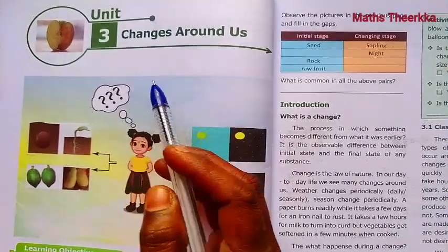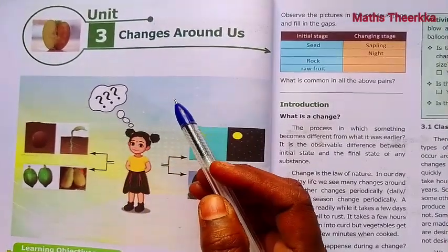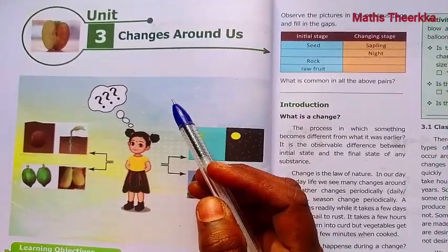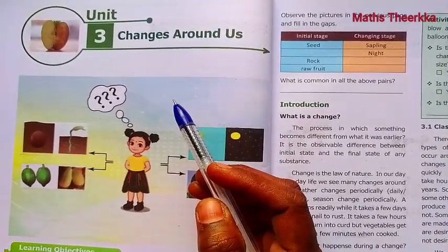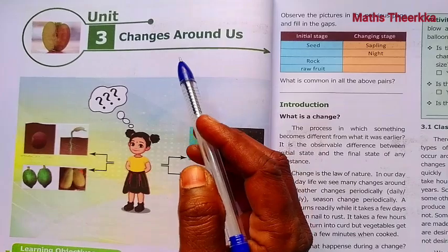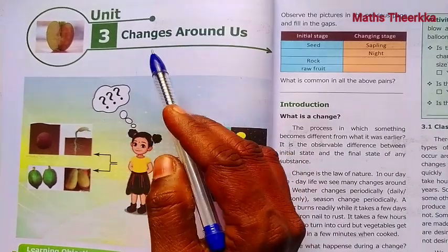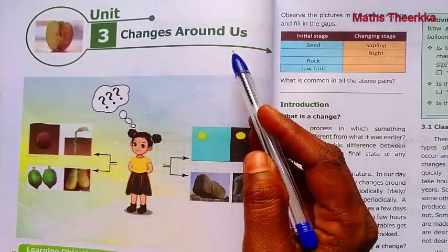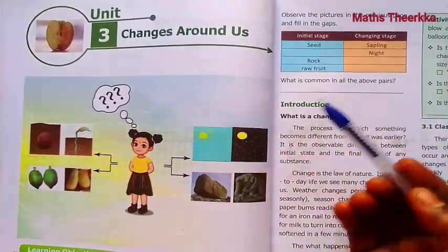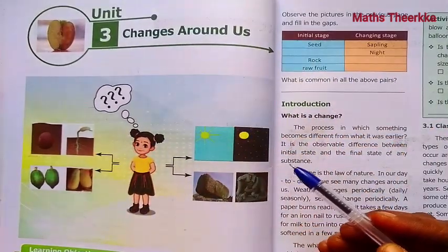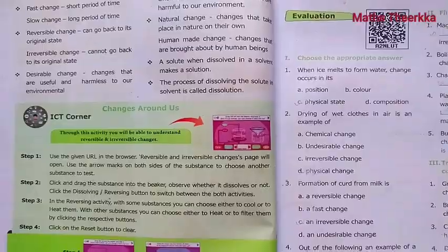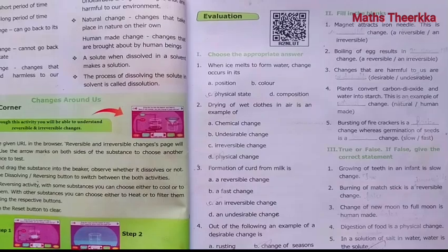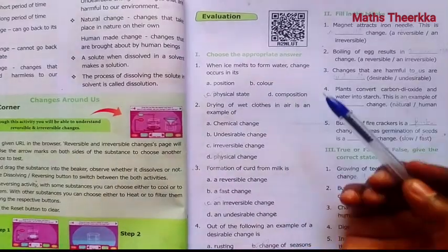Hello students, welcome to Max Thirika channel. Sixth standard Samacheer book Term 2, Science Unit 3: Changes Around Us. Book back one-word answers. Page number 13, evaluation.